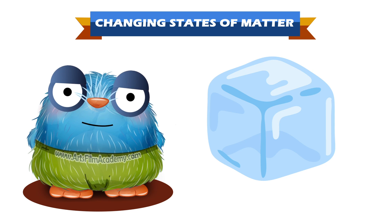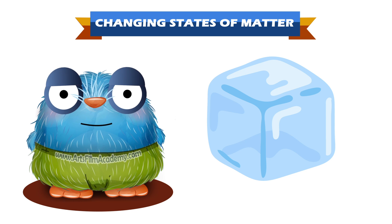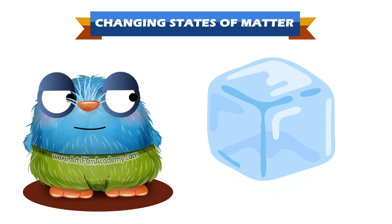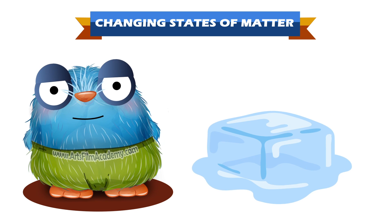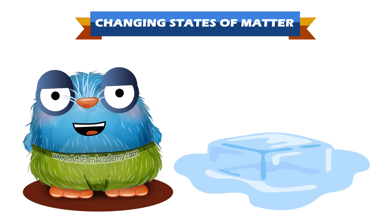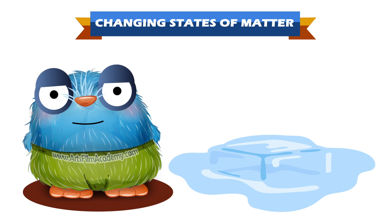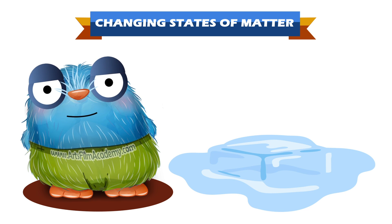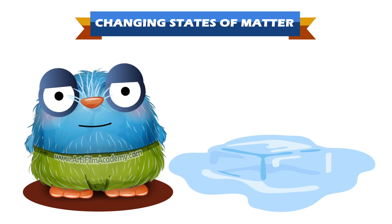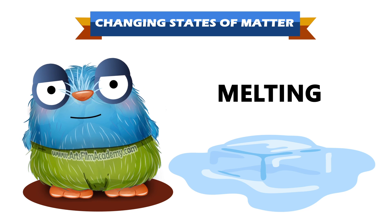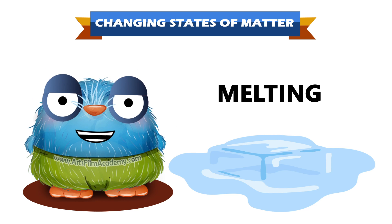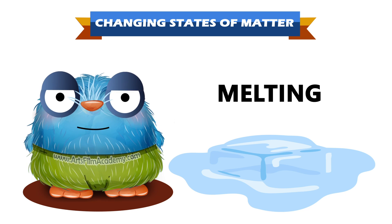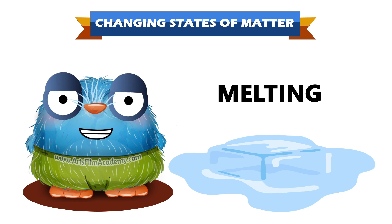When an ice cube is allowed to melt, it turns into water. Now the ice cube has changed from solid to liquid state. This process is called melting.